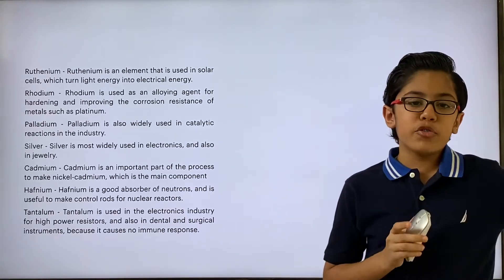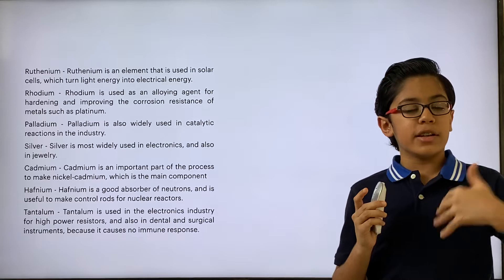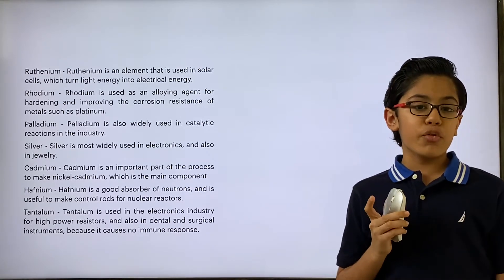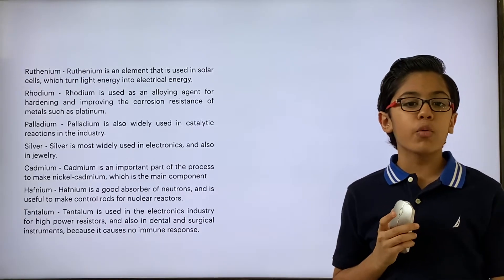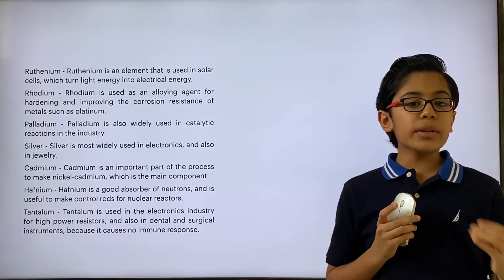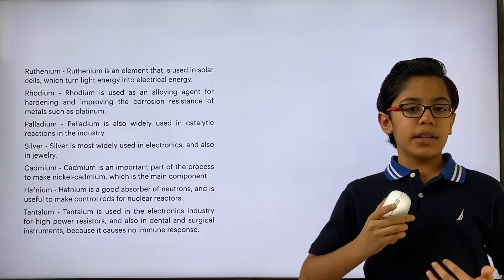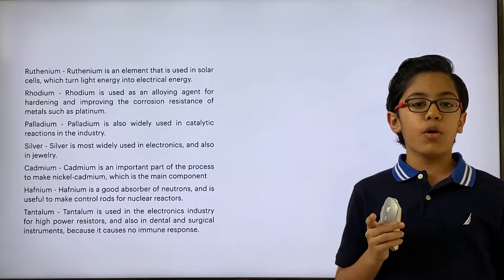Hafnium is very useful in absorbing neutrons into itself without blowing up. This is why it's very useful in nuclear plant control rods, because if something goes wrong, you just activate those, and it'll absorb all the neutrons into itself and prevent the whole thing from blowing up.